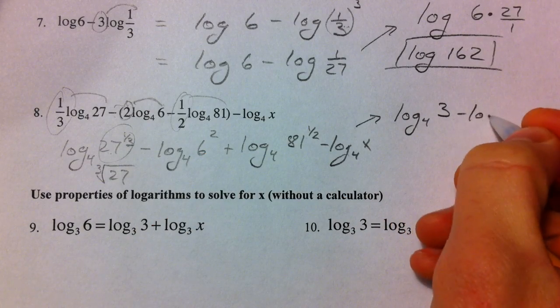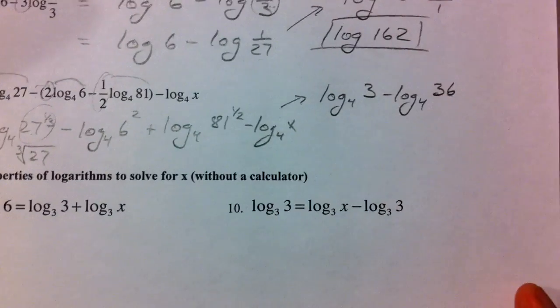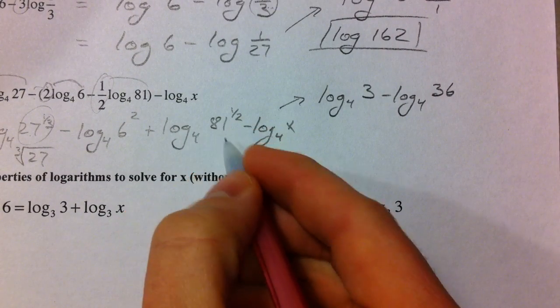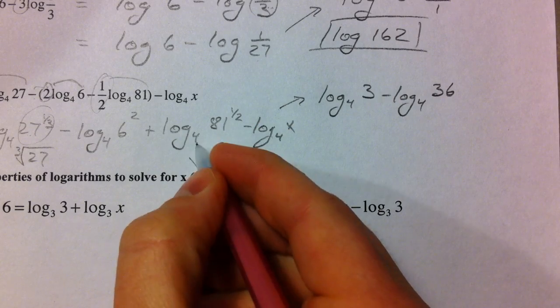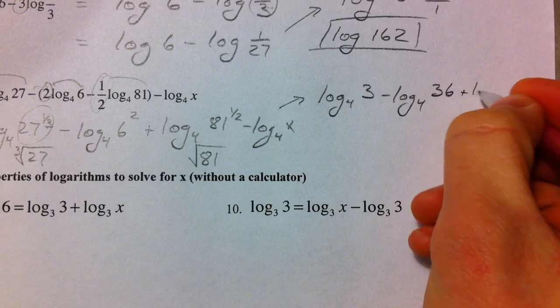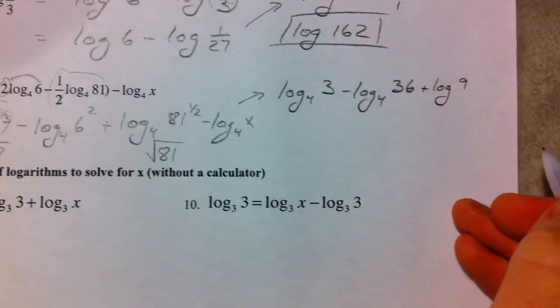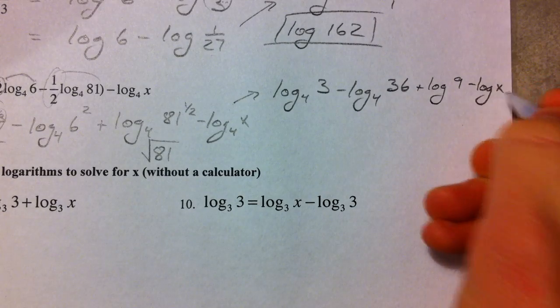Minus log base 4, 6 squared is 36, log base 4 of 81 to the 1/2 power, that's the square root of 81, so that's plus log of 9. And then we have minus log of x.